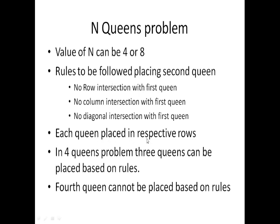Each queen is placed with respect to rows. In the 4-Queens problem, we use a 4×4 chessboard and place queens based upon the rules. In the 4-Queens problem, 3 queens can be placed based upon the given rules, but the 4th queen cannot be placed. Let us see the example.